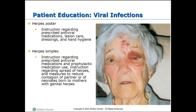Herpes simplex virus has two types. HSV-1 tends to affect the patient's mouth and face, spreading through contact with the virus in saliva or skin. HSV-2 spreads through sexual contact and usually affects the patient's genitals. Importantly, HSV-2 doesn't need to be physical sex — it could be oral sex. If someone has HSV-1 on their mouth and has oral sex, they could give the other person HSV-2, as it could mutate to that area. We must educate our patients about this.